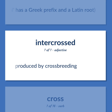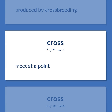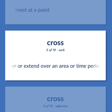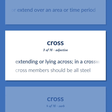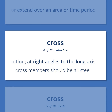CROSS — Produced by crossbreeding. To meet at a point. To cover or extend over an area or time period. Extending or lying across, in a crosswise direction, at right angles to the long axis. Example: 'Cross members should be all steel.'